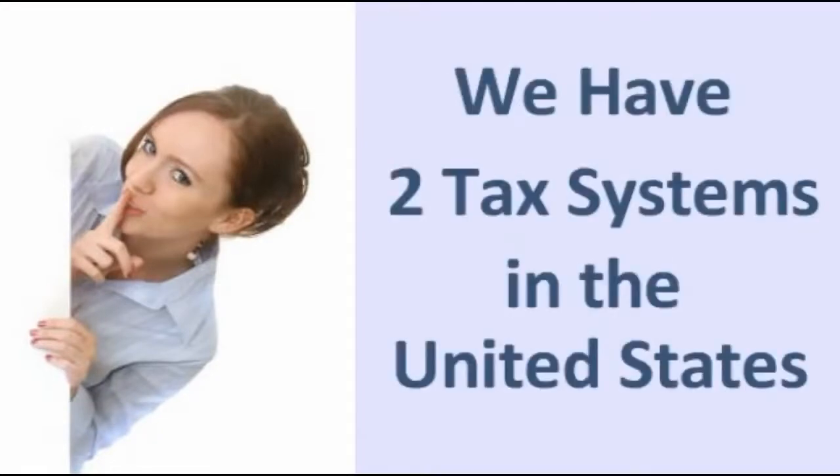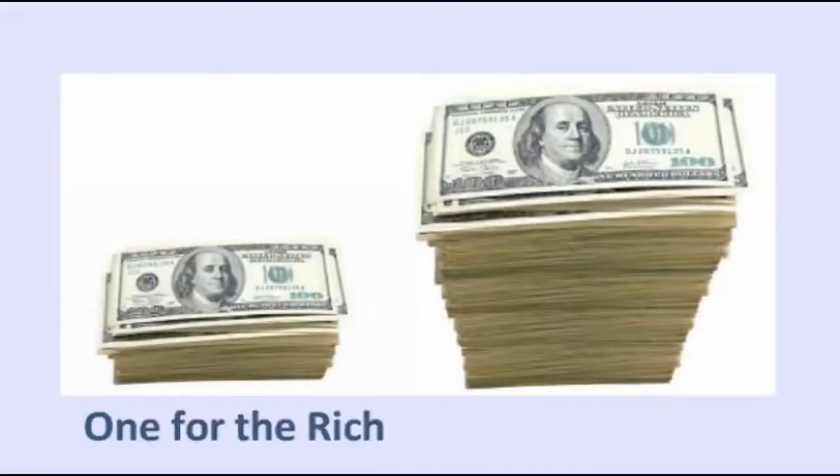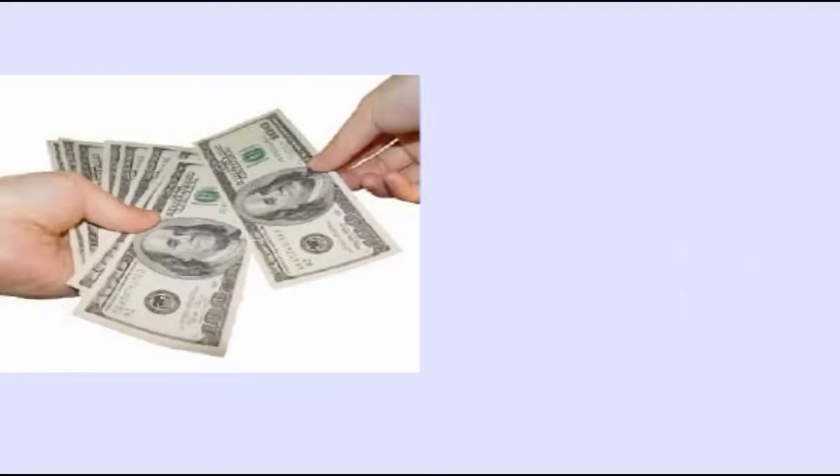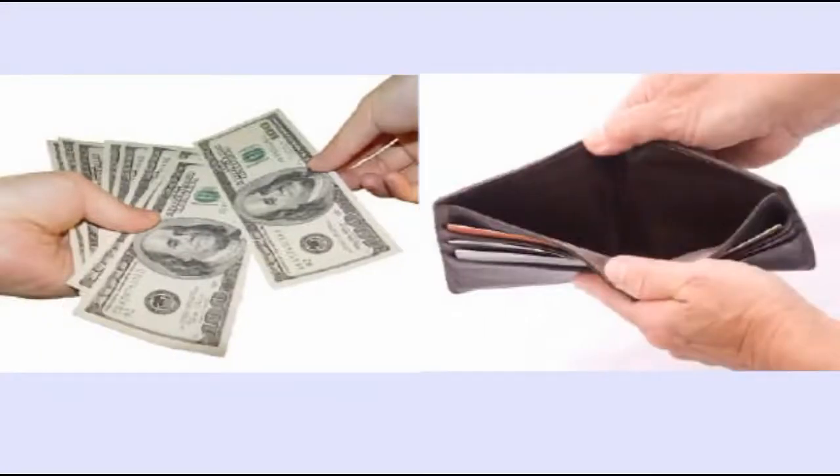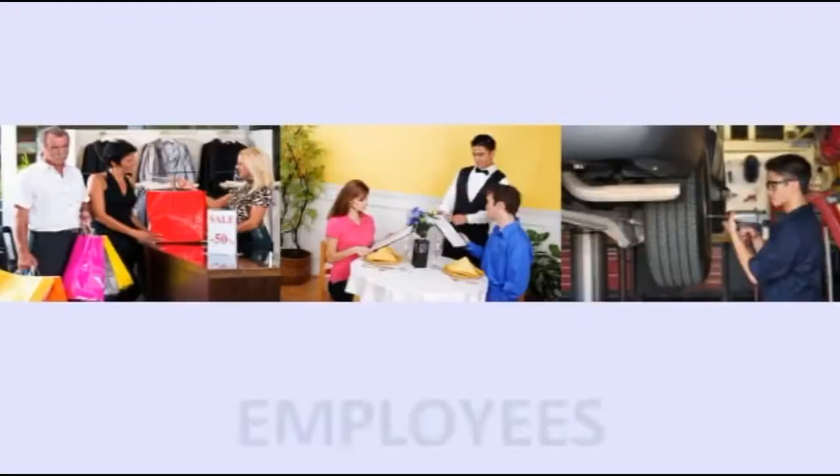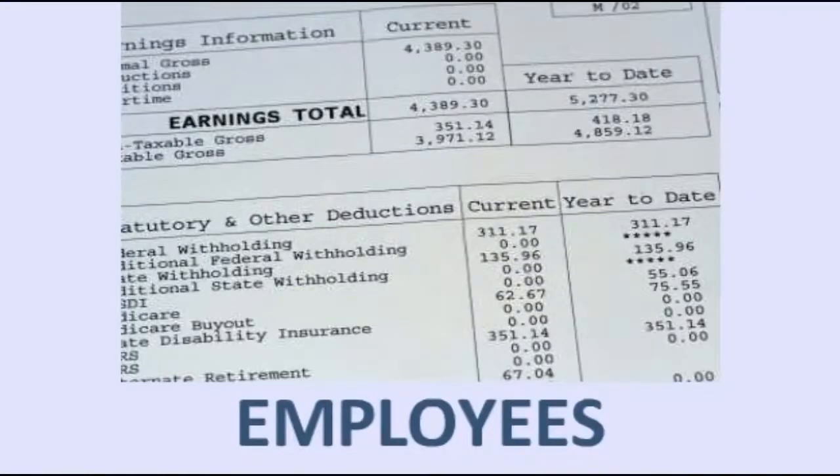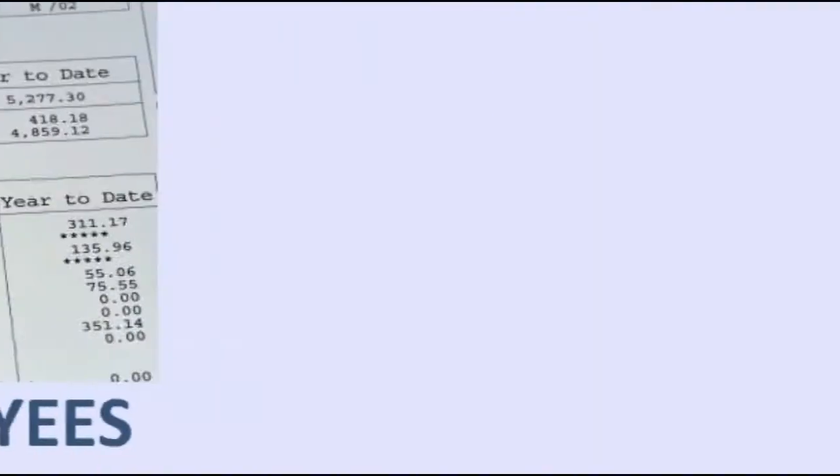They have a secret, and the secret is that we have two tax systems in the United States. When I say that, most people think there's one for the rich and one for the poor. That's not quite true. There's one to make you rich and one to make you poor. There is one for employees which is designed to take your wealth and make you poor because you are taxed on dollar one.